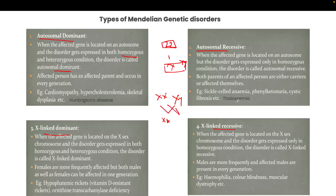Examples of autosomal recessive disorders include sickle cell anemia, phenylketonuria, cystic fibrosis, and thalassemia. Examples of autosomal dominant disorders include Huntington's disease and hypercholesterolemia. Remember these examples from an exam perspective — questions can be asked about which category a disease belongs to.